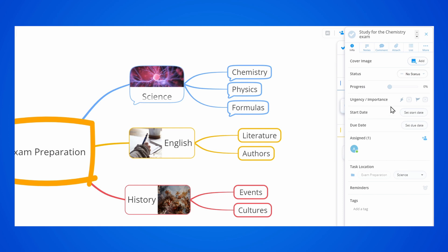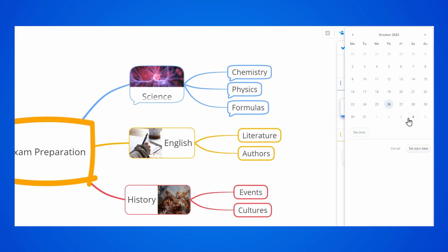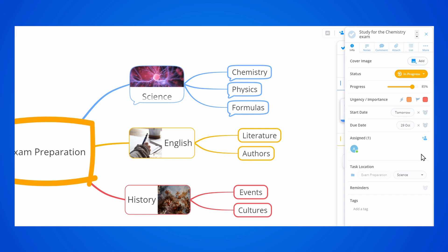You can click on a task to access the task options. From here, you can update the progress, add urgency and importance tags, set start dates and due dates, and you can add notes to make sure no idea is missed.